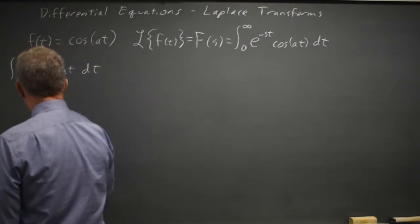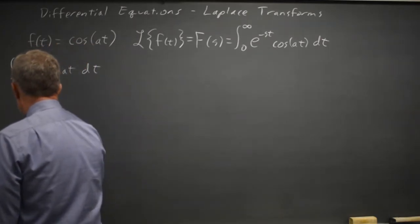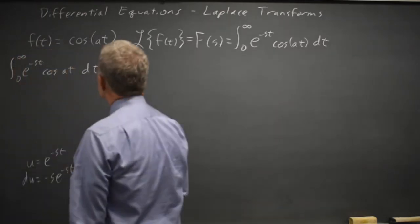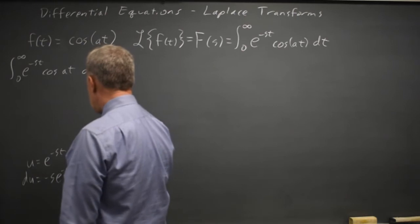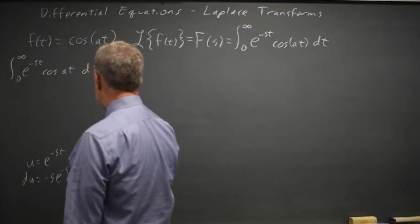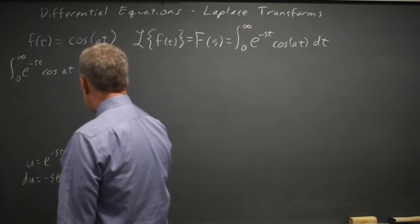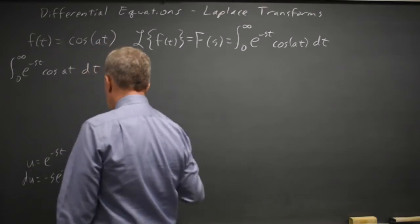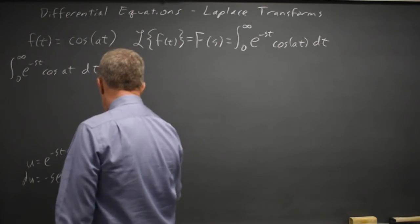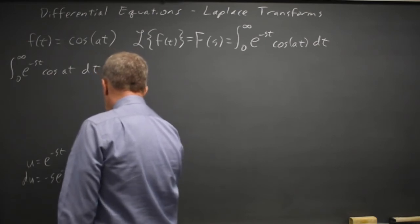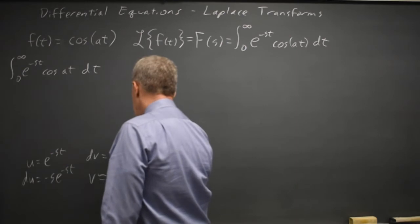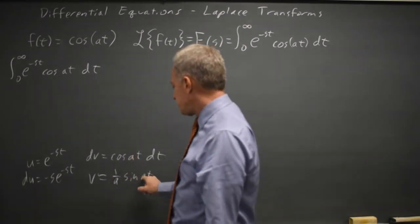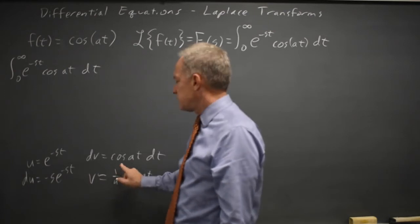U equals the exponential, so du is negative s e to negative s t. I could use the trig function as u also, so it doesn't matter with exponential times sine or cosine. dv then has to be the cosine a t dt. So v is 1 over a times the sine of a t. Derivative of positive sine is positive cosine, chain rule counts, it's 1 over a, so I did that correctly.